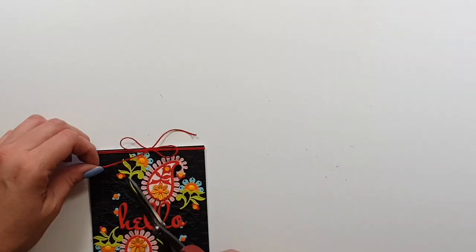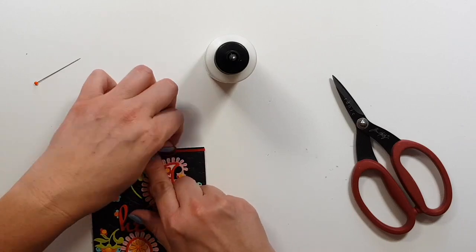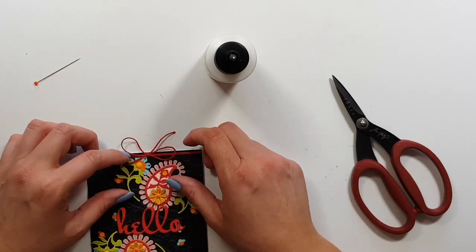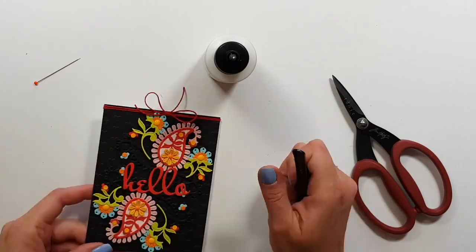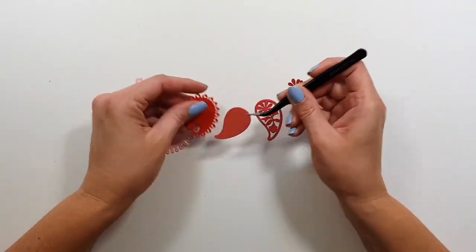So to finish off this card, I'm adding some red twine ball and then that's it. And I'm going to move on to the next card.